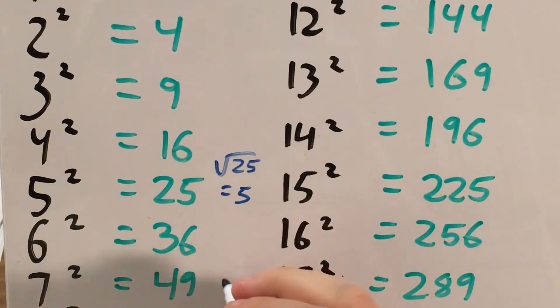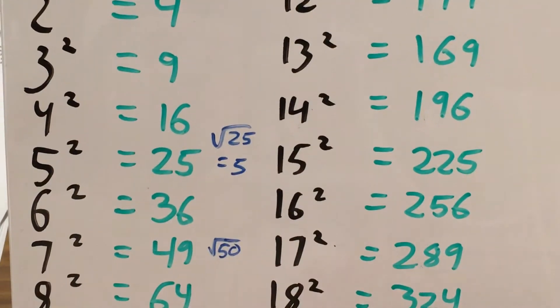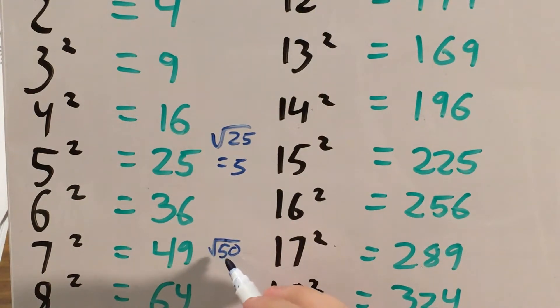If I'm trying to find the square root of 50, since 50, the number inside my square root is very close to 49, then I can say that it's about equal to the square root of 49, which is 7.